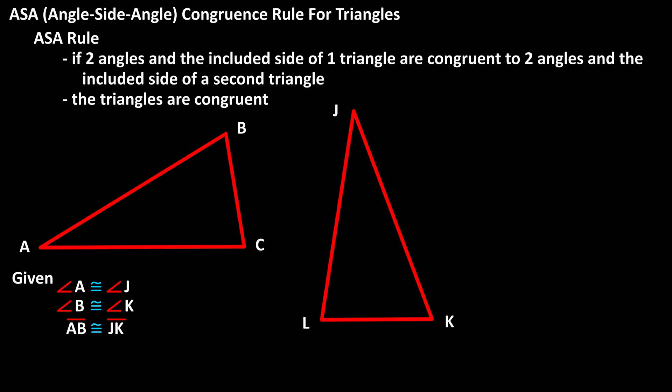and segment AB is congruent to segment JK. We can put in an arc with one tick mark for angles A and J, and an arc with two tick marks for angles B and K to show this visually. We can also put in a single tick mark on segments AB and JK to show their congruence.